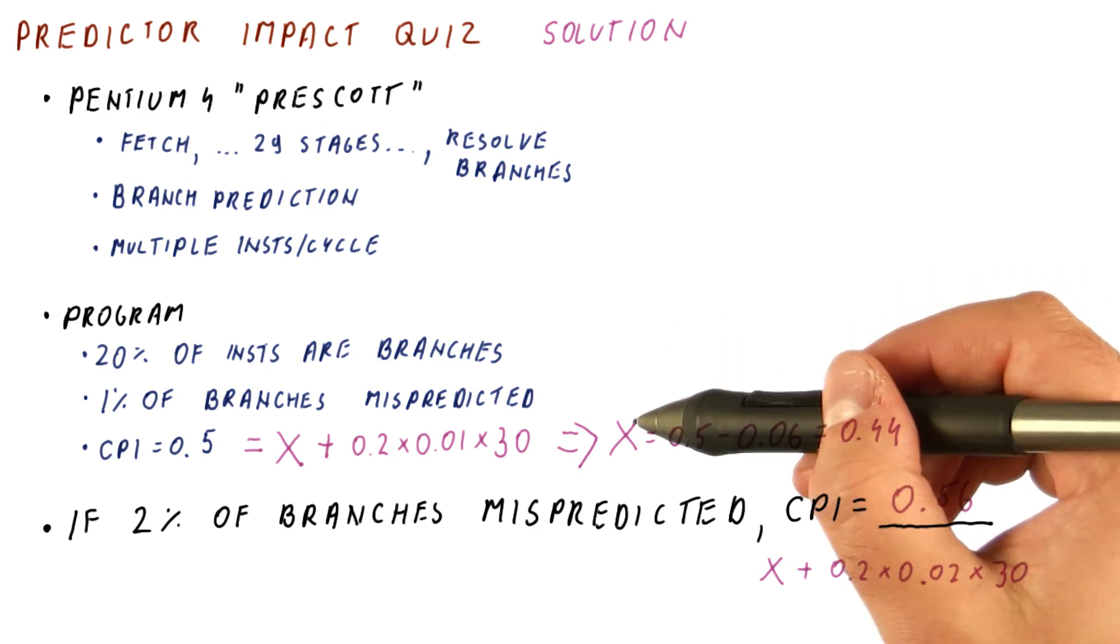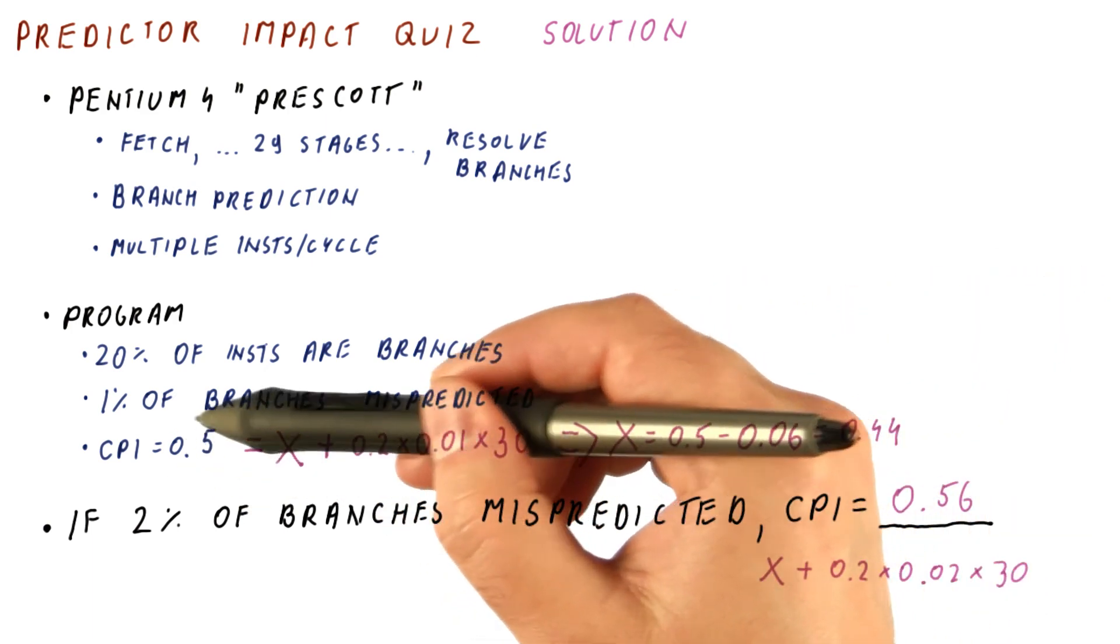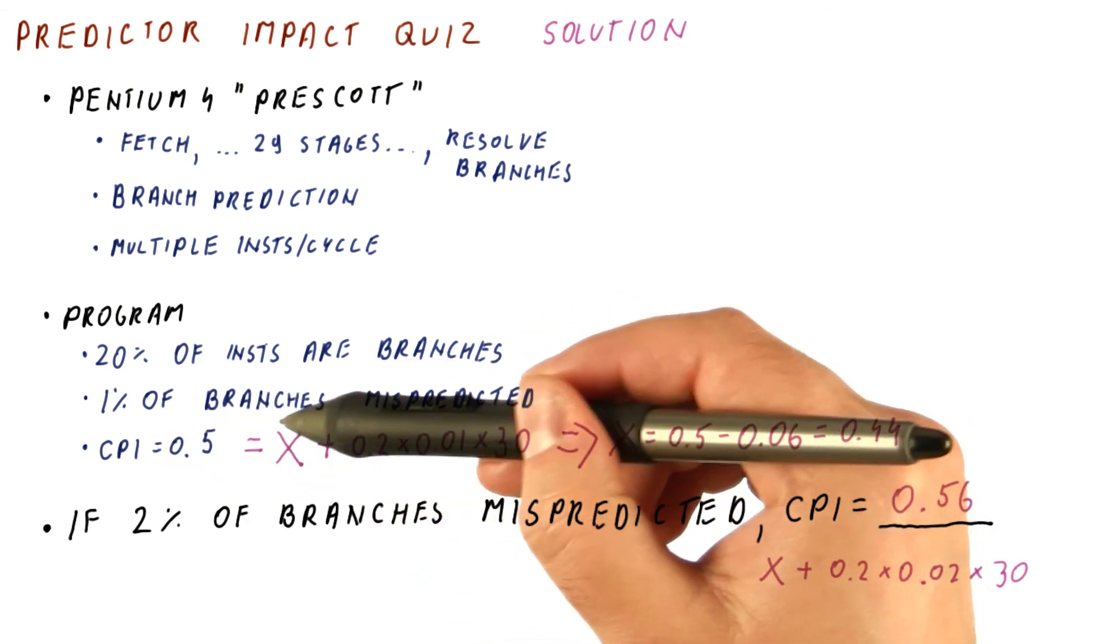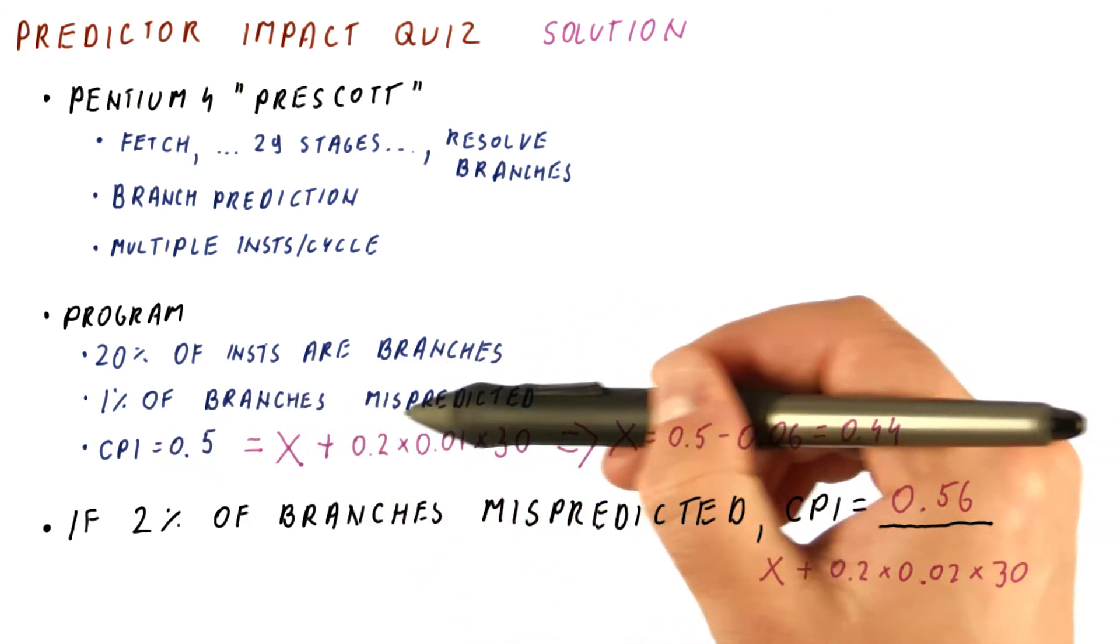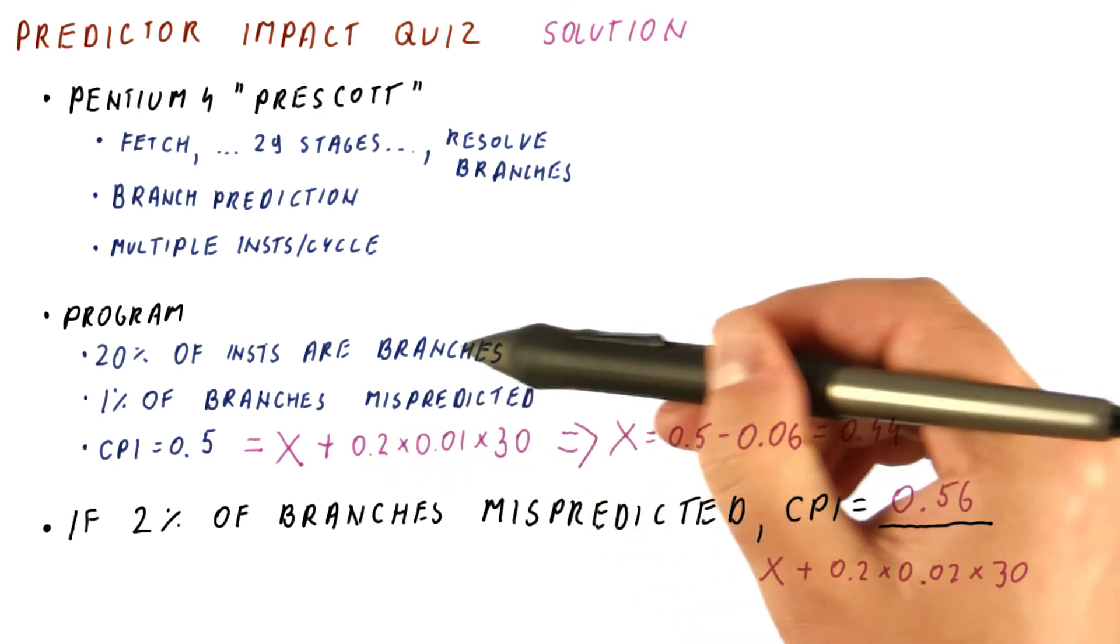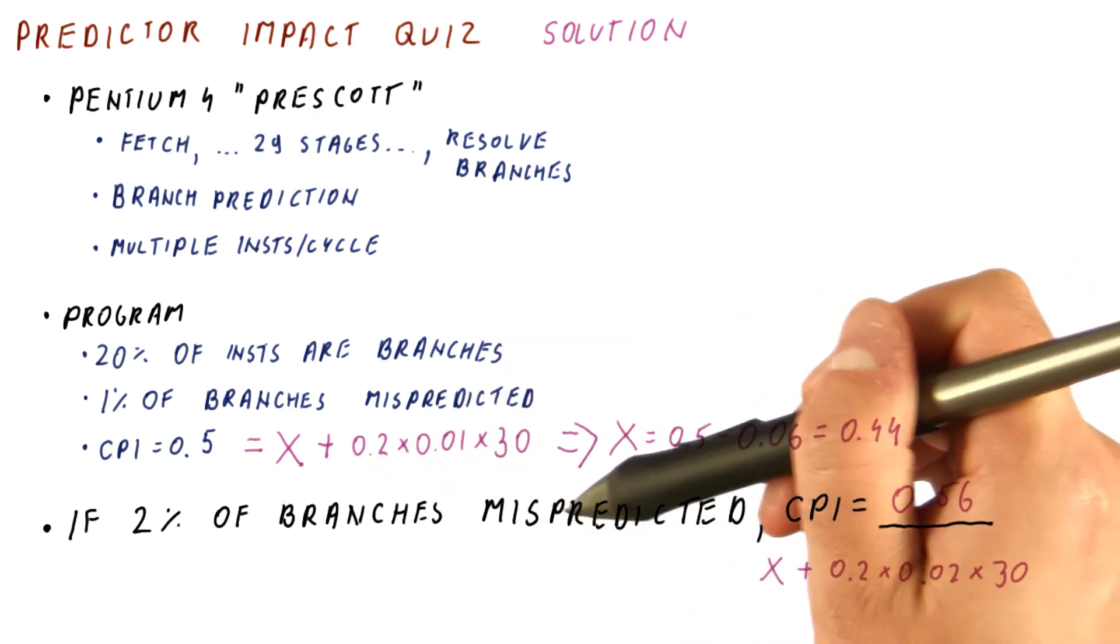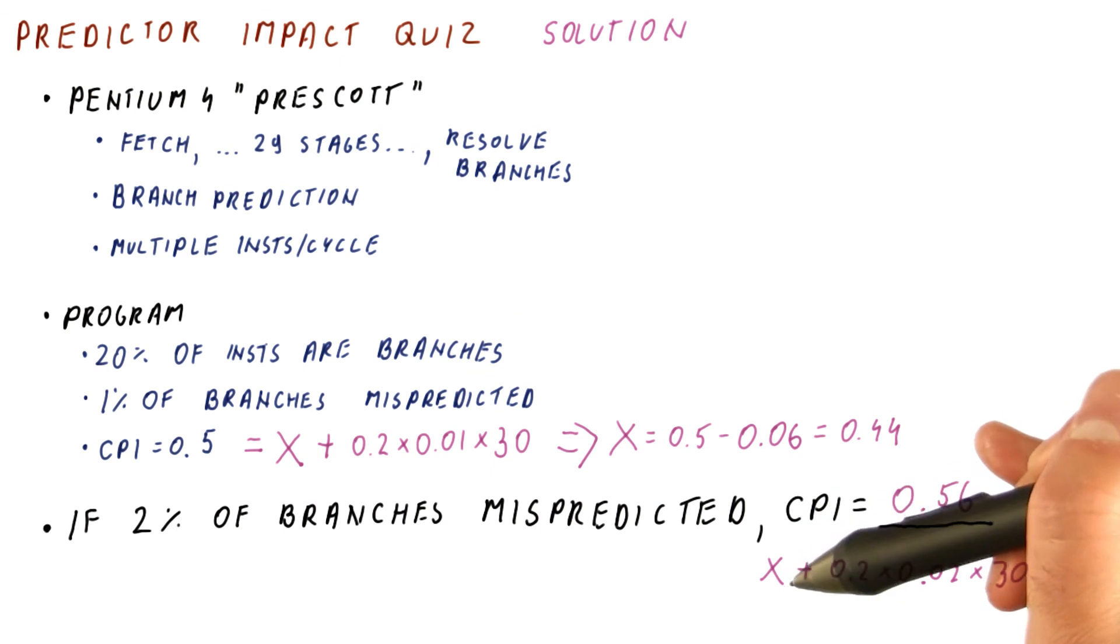The key to solving this was that we were given the actual CPI. We needed to compute what the ideal CPI is after we remove the branch penalty, and then compute the new branch penalty and add it to this ideal CPI to get the answer.